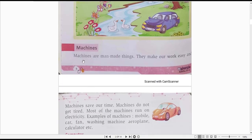Next one is machines. Machines are man-made things. They make our work easy and machines save our time. Ab hum janenghe machines ke baare mein. Toh machines joh hoti hai woh man-made things hai. Jisko human beings ne tiyar kiya hai. They make our work easy.